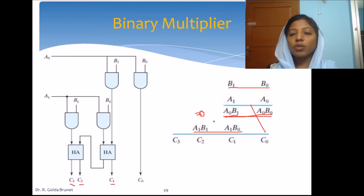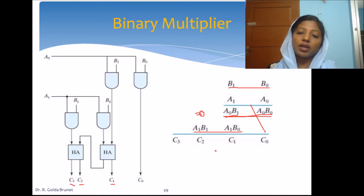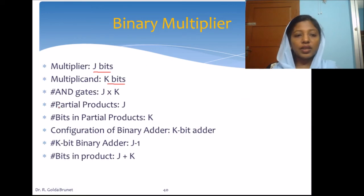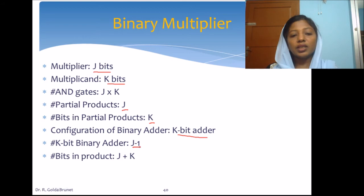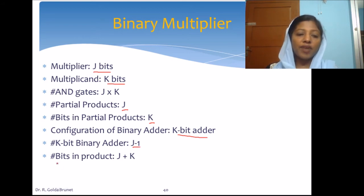The configuration of the adder will be a k-bit adder, and since there are j partial products we will require j−1 adders, each being a k-bit binary adder. The number of partial products is j, which depends on the multiplier bits, and the number of bits in each partial product depends on the multiplicand which is k bits long. So we need j−1 k-bit adders, and the final product will have j+k product bits.